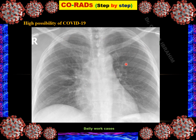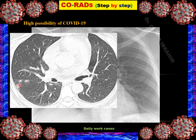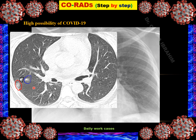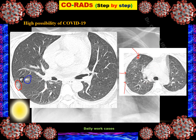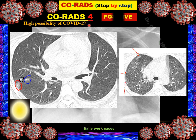Case 10: Frontal chest radiograph showing nodular opacity and inhomogeneity in the middle zone of the right lung. HRCT shows lung nodules surrounded by halo signs — nodules surrounded by ground glass opacity like a halo — unilateral, also associated with other ground glass opacity based on the pleural surface on the same side. Unilaterality of these typical findings makes it CO-RADS 4 — not extremely typical, high possibility of COVID-19. RT-PCR was positive.